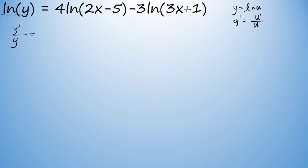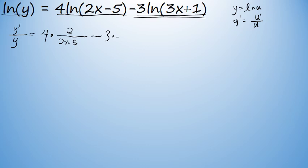On the right side of the equation, the derivative of 4 times the natural log of 2x minus 5 would be 4 times a fraction with 2x minus 5 in the denominator and the derivative of 2x minus 5, which is 2, in the numerator. The derivative of the second term, 3 times the natural log of 3x plus 1, is a fraction with 3x plus 1 in the denominator and the derivative of 3x plus 1, namely 3, in the numerator.